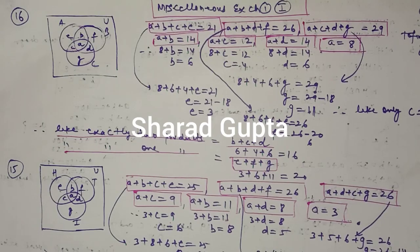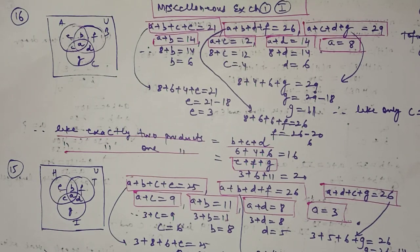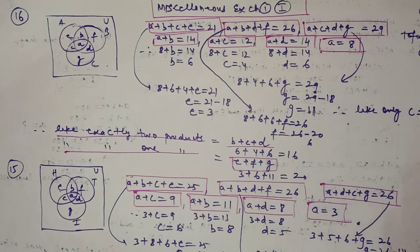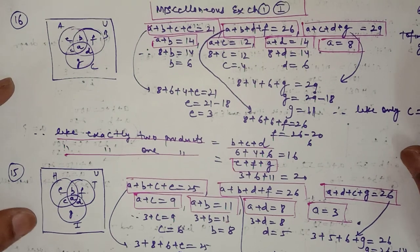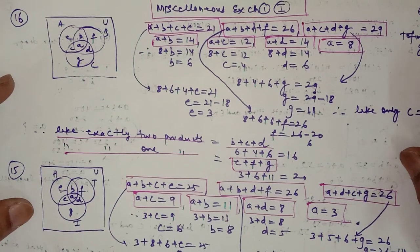Hello, this is lecture number seven of the chapter Sets for class 11th. We are starting with the miscellaneous exercise. First we'll do the last four questions of this exercise, then we'll start with question number one, because those questions are based on what we covered in the last lecture — the word problems based on the Venn diagram.